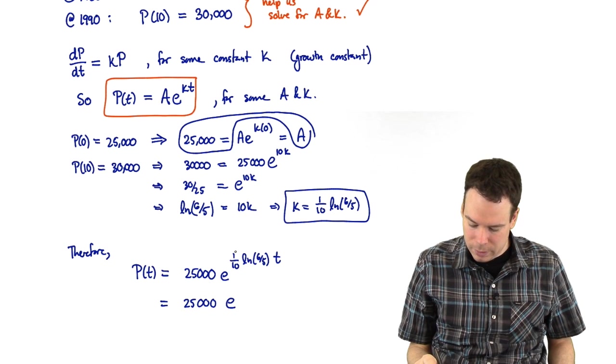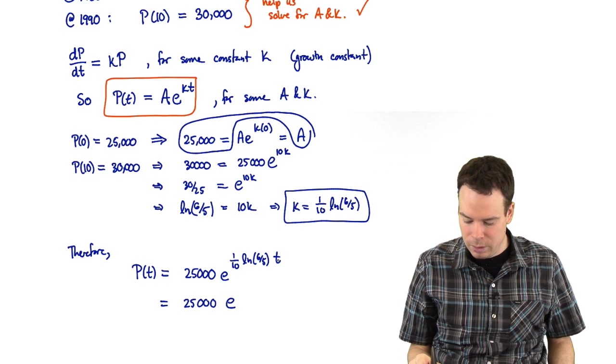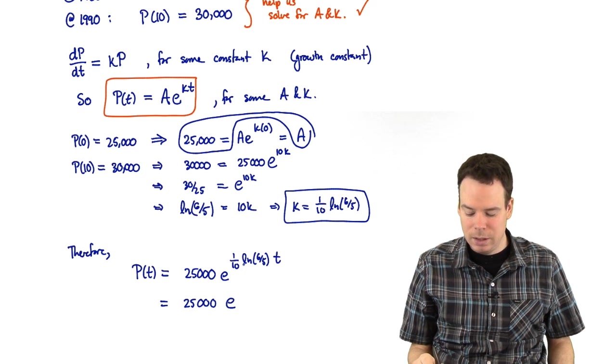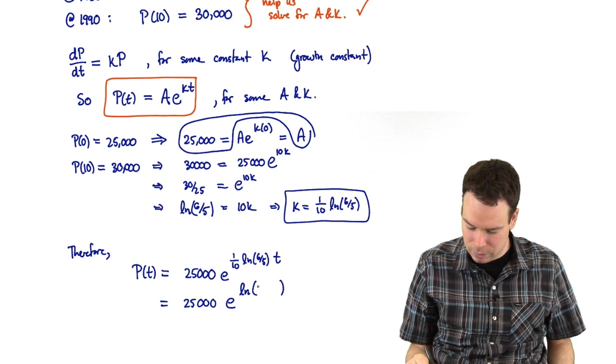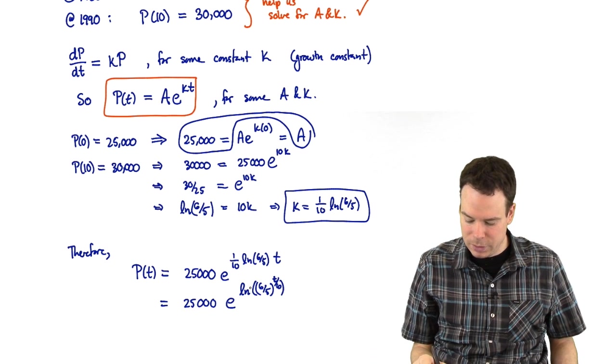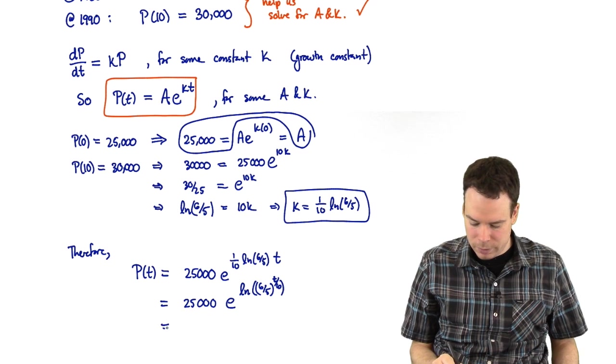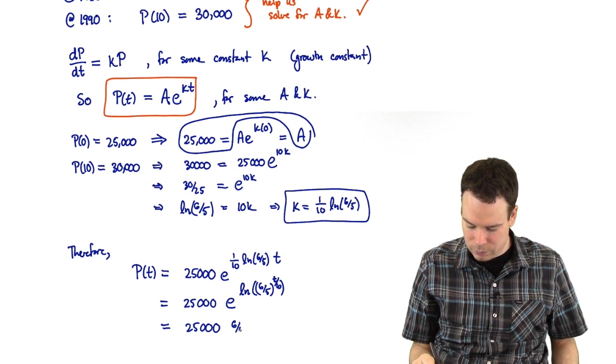So I'm going to look at, I've got a one-tenth multiplied to a logarithm, also a t there. So I can combine the one-tenth and the t together and move that into the exponent of what's inside the logarithm. So that's a six-fifths t over 10. So I'm just using properties of logs. Now I've got an exponential composed with a logarithm. They're inverses to each other so they'll cancel out.